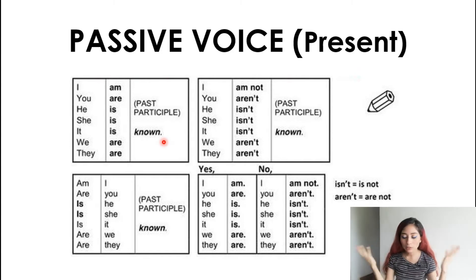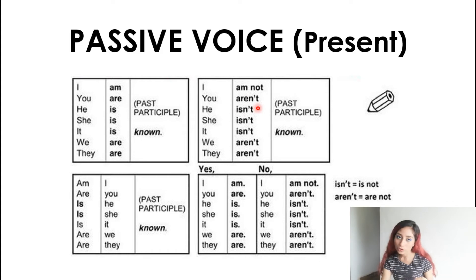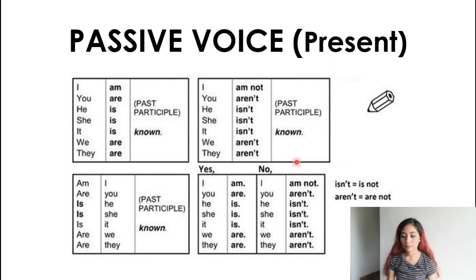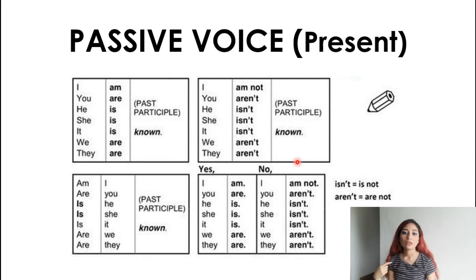For negative sentences, you start with the subject, then the verb 'to be,' and 'not': I'm not, you are not or you aren't, he is not or he isn't — and then the past participle verb. Now for questions, remember: we start the question with the verb 'to be,' then the subject, and lastly the past participle. Short answers: yes I am / no I'm not; yes you are / no you aren't; yes he is / no he isn't.